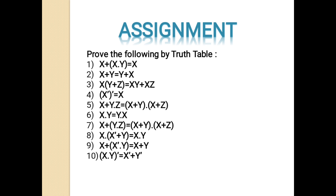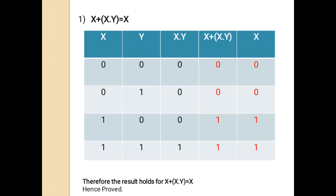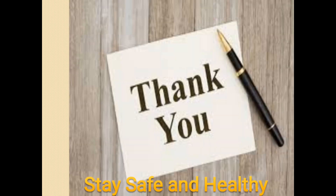Now I'm giving you an assignment. You have to prove all these statements using the truth table. I have solved question number one for you — the values of column 4 and column 5 are the same, so hence it is proved. Thank you for watching the video. Stay safe, stay healthy. Thank you.